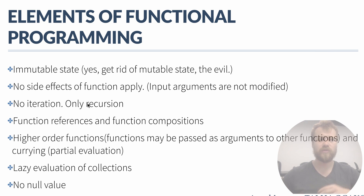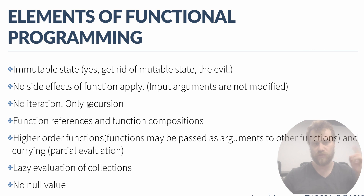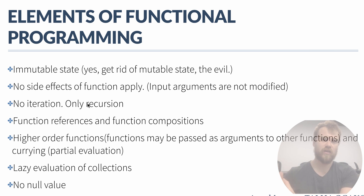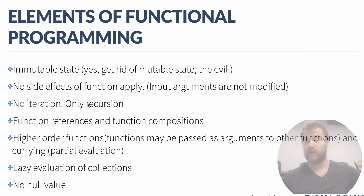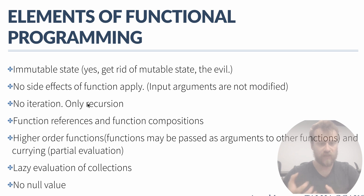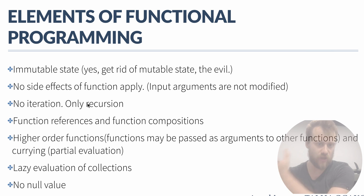Let's talk about elements of functional programming. The first one is immutable state. The most important thing is protecting objects from modifications, because mutable state is the evil of concurrent programming. Second is no side effects in functions — a function cannot change the values of the arguments or external values; it may only create a brand new object to return.